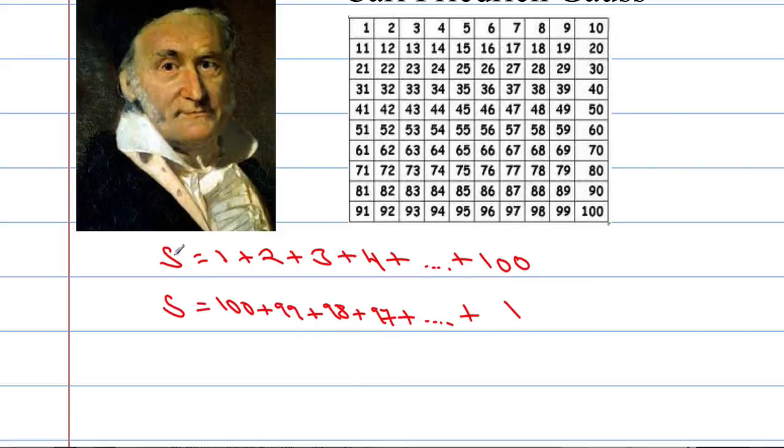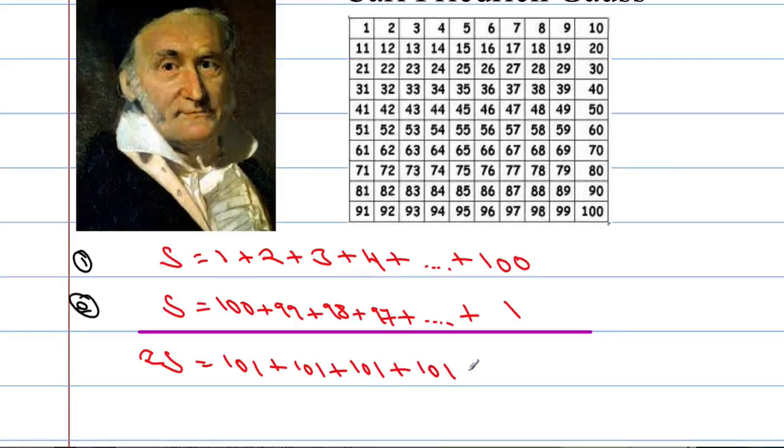Now watch what happens if we add the two lines together. We're going to add line 1 with line 2. s plus s gives us 2s. Then 1 plus 100 is 101. 2 plus 99 is 101. 3 plus 98 is 101. You can see now that every single time we're going to add these two numbers, we get 101. How many 101s will appear? It's going to be 100 terms here, and we've added that to another 100 terms. So we're going to end up with 100 lots of 101.